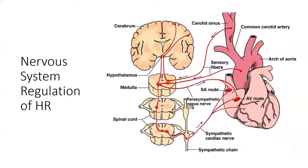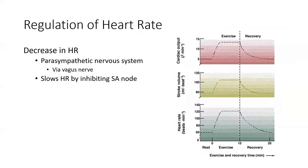The autonomic nervous system can change how we contract our heart and increase or decrease heart rate. Sympathetic nerves stimulate heart rate, and parasympathetic nerves lower it. We can also alter heart rate based on arterial pressure — if baroreceptors sense too high a blood pressure, heart rate will lower. The parasympathetic nervous system slows heart rate by inhibiting the SA node through the vagus nerve.